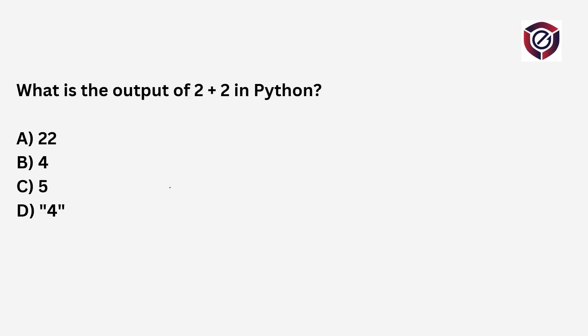What is the output of 2 plus 2 in Python? Both values are in integer format, so when you add two integers it is a mathematical sum operation. The result is 4. If both values were in string format, the result could have been '22', but since they are integers, it is straightforward integer summation. The correct option is B — the answer is 4.